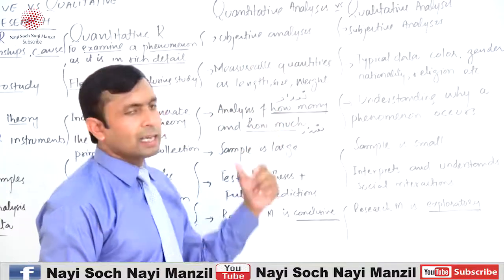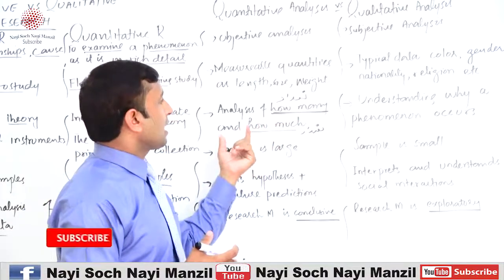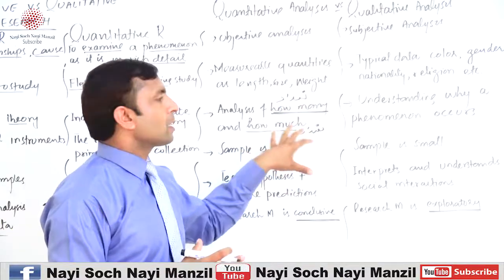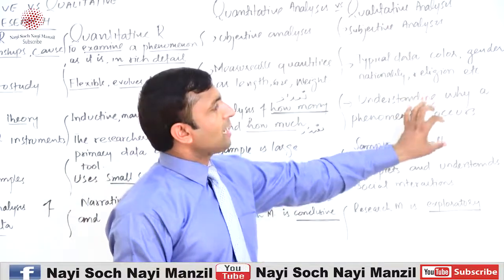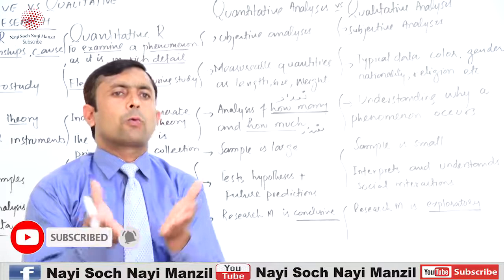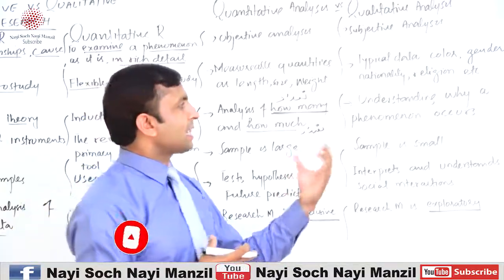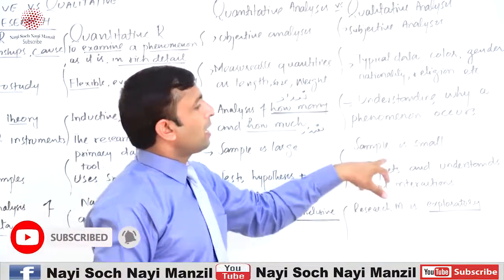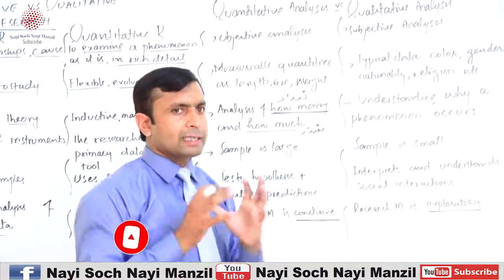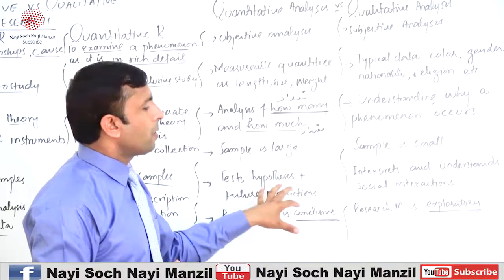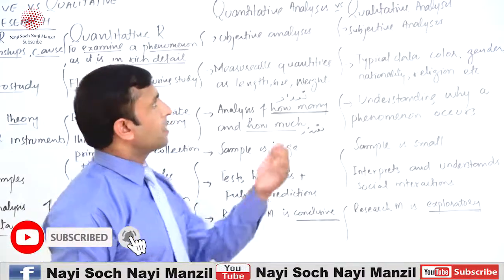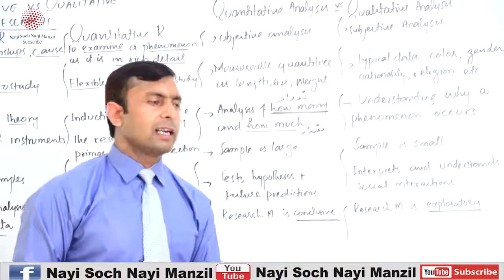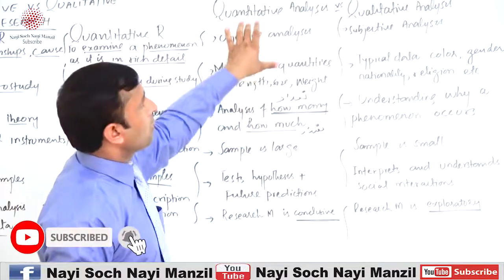Quantitative analysis deals with how many in numbers, frequency, and how much in quantity — it is the analysis of numbers, frequencies, and quantities. Qualitative analysis is concerned with understanding how or why. In qualitative analysis, the sample is small, and there are hypotheses and further predictions. Qualitative analysis actually interprets and understands social interactions.